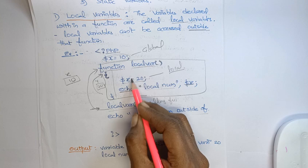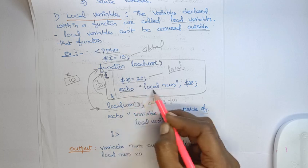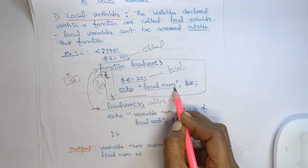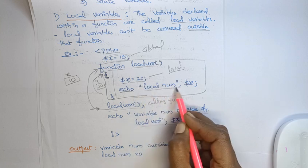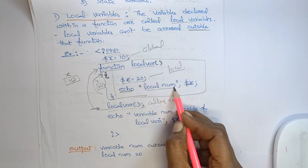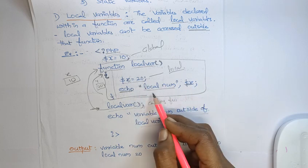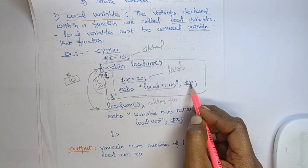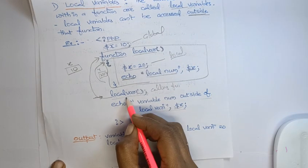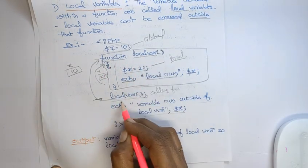I am printing this local variable value. To print any value, use the statement 'echo'. You can write a label like 'local variable value' in double quotes, then a comma and dollar x to print the variable. So within the function, it will print the local variable value, which is 20. The function body is then closed.